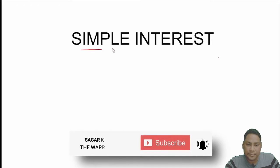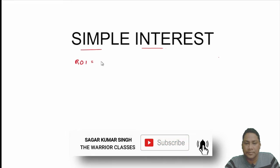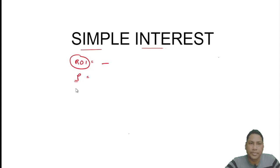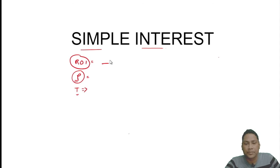Simple interest is called so because its rate of interest is the same every year. The rate of interest is applied on the principal, which is the amount initially taken from a bank or lent to anyone. Time is the period for which the principal is given to a person, at a certain rate of interest, which is always expressed in percentage.